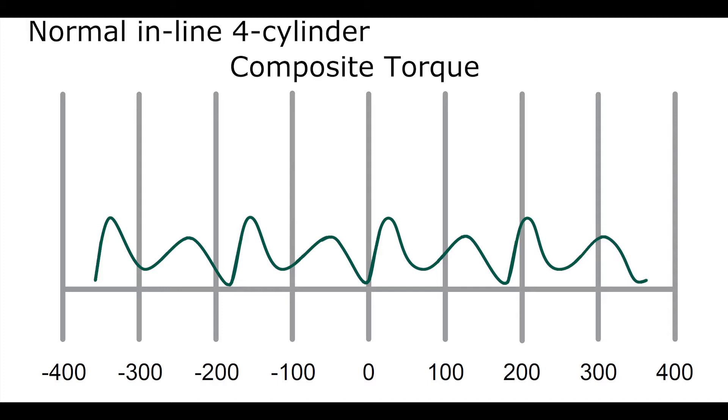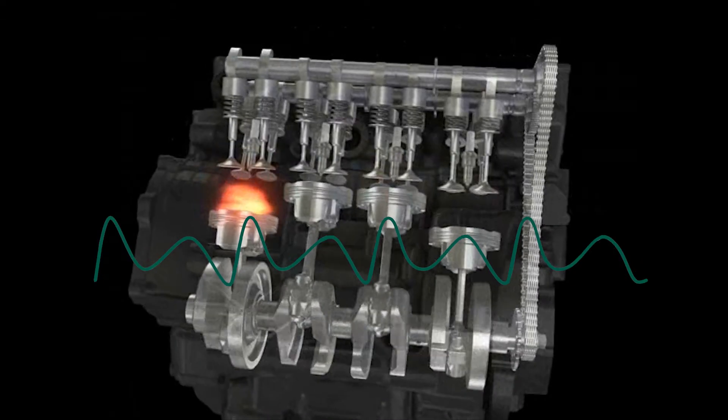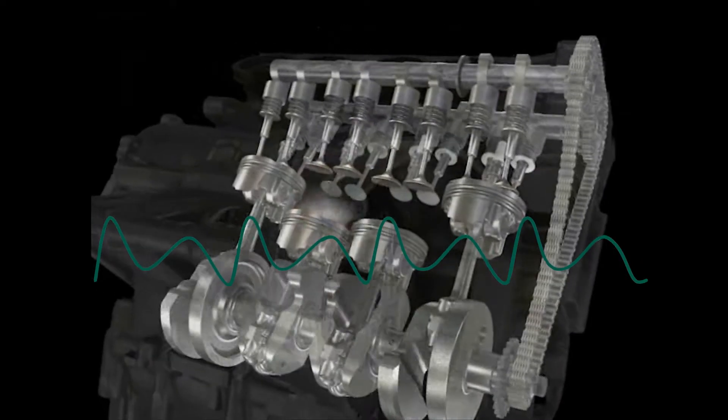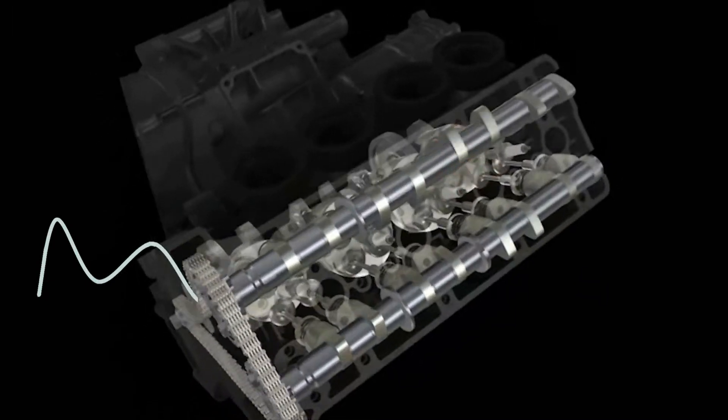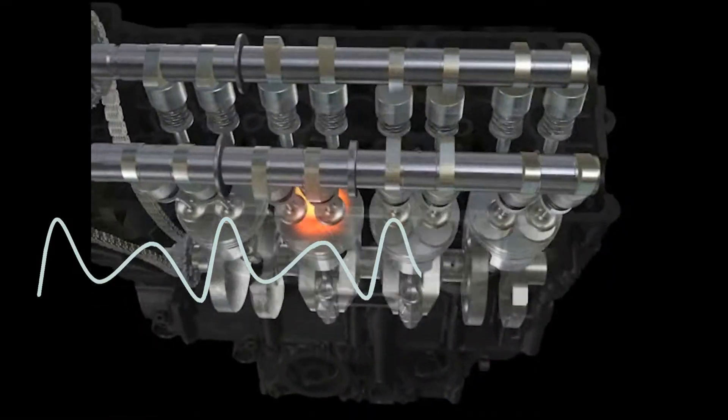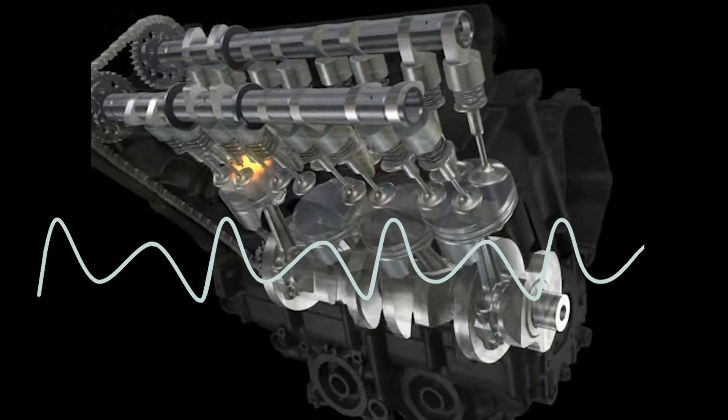In a typical four-cylinder engine with a flat-plane 180-degree crankshaft, the composite torque really doesn't match the combustion torque output. The resulting composite torque is referred to as noisy. So when you ride a bike with this type of engine, you're less able to feel the torque driving the rear tire.